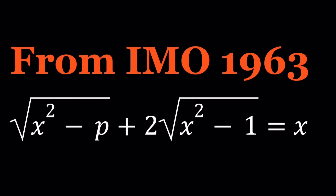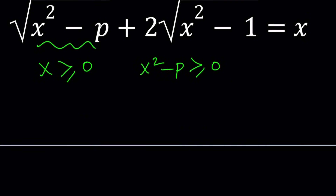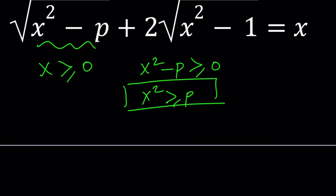Let's start by looking at the radicals. If you look at the left-hand side, it's the sum of two radicals. If x is real, they need to be greater than or equal to zero, so their sum — which is x — is also greater than or equal to zero. That's our first requirement. Then we need x squared minus p ≥ 0, implying x squared ≥ p. And x squared minus one ≥ 0, implying x squared ≥ 1.